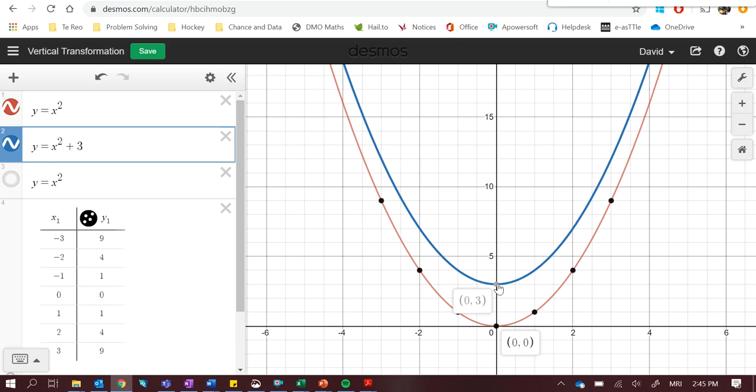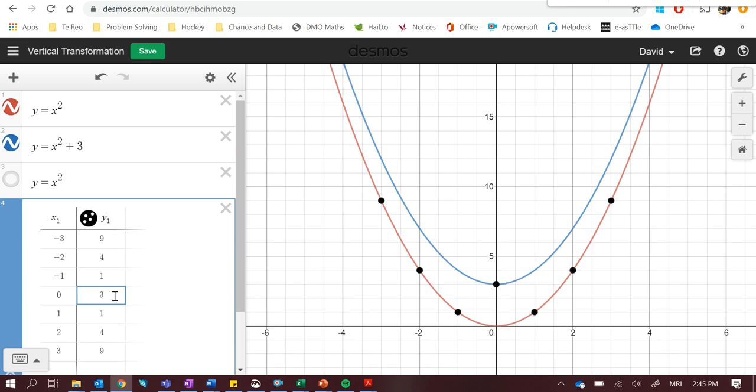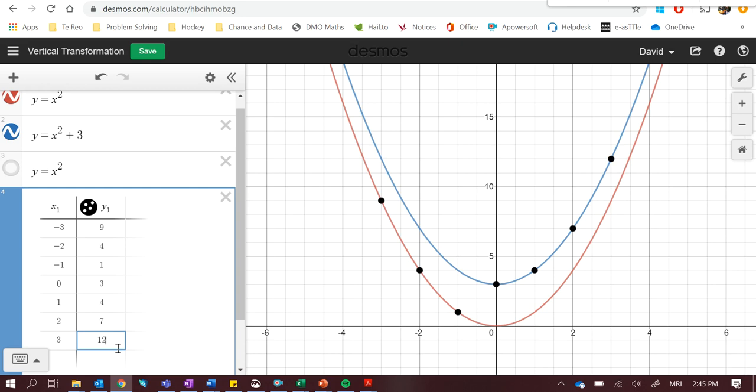The reason for this is if we go through and look at our table here, we're essentially adding 3 to every single one of these values. So where we had 0 before, it now becomes 3. Where we had 1 before, it's now 4, 7, and 12. The same the other way as well. This is now 4, that's now 7, and that's now 12. So what we've done is we've added 3 onto every value, so every point on here is 3 higher than the x squared parabola.